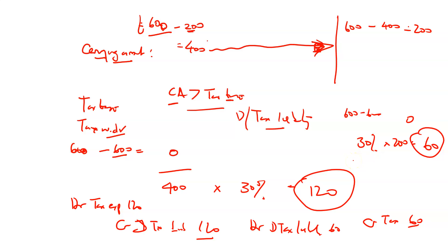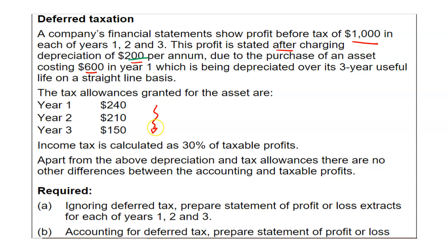Let's go back and do the actual question using that method. I can account for deferred tax simply by comparing — I want to take us straight to the exam. This is a £600 asset. At the end of the first year, my carrying amount is £400. My carrying amount at the end of the second year is £200. My carrying amount at the end of the third year is £0 — because £600 minus £200 in the first year, £600 minus £400 in the second year, £600 minus £600 in the third year. That's my carrying amount.